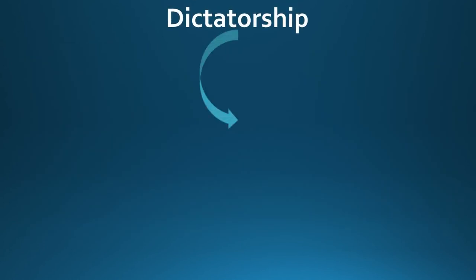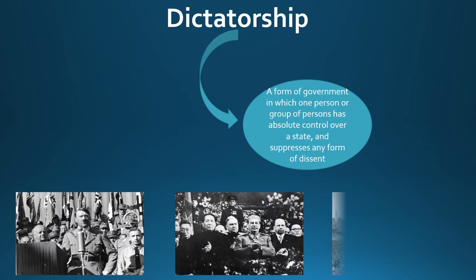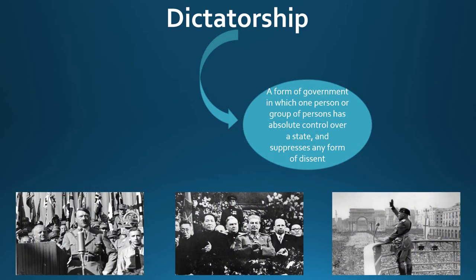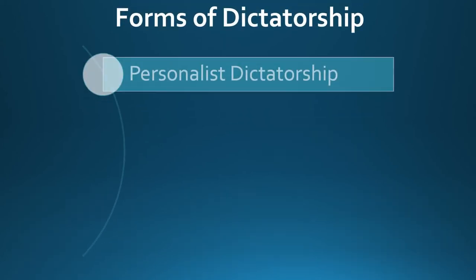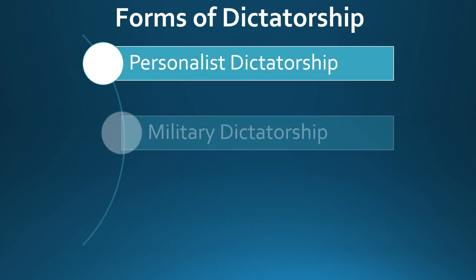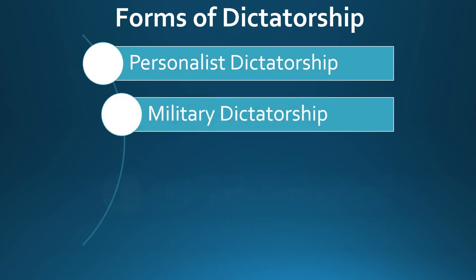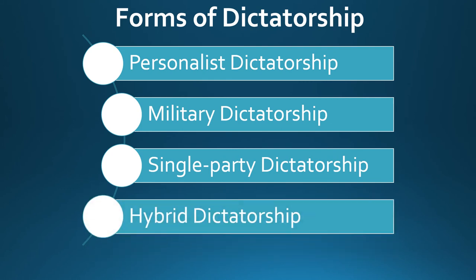A dictatorship is a form of government in which one person or group of persons has absolute control over a state and suppresses any form of dissent. There are several forms of dictatorships: personalist dictatorships, military dictatorships, single-party dictatorships, and hybrid dictatorships.